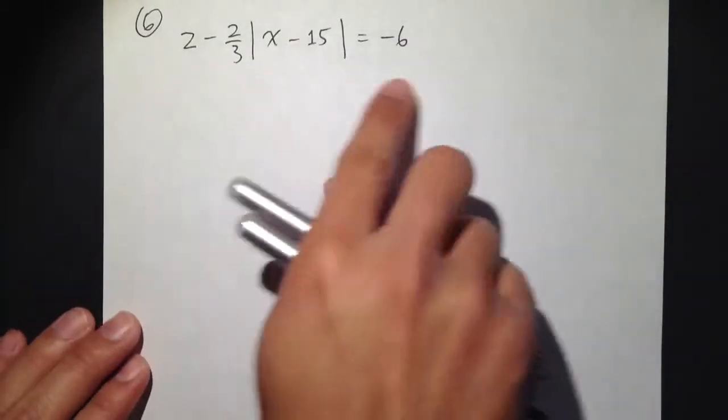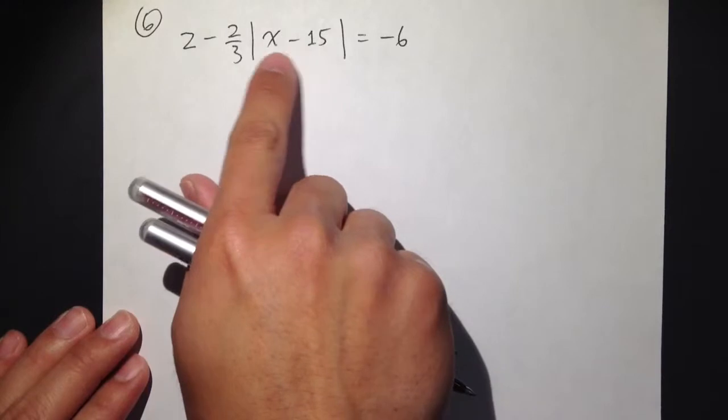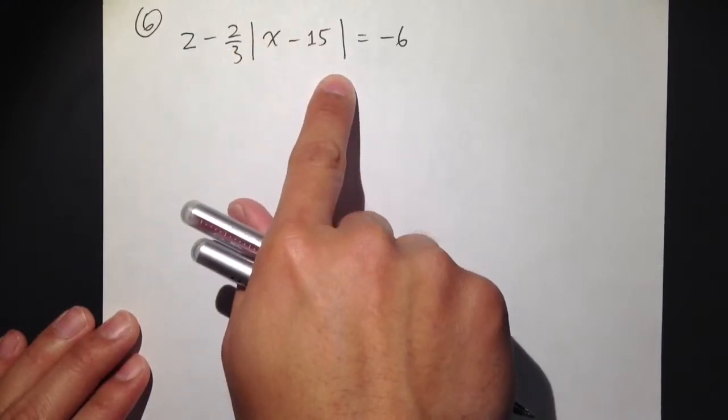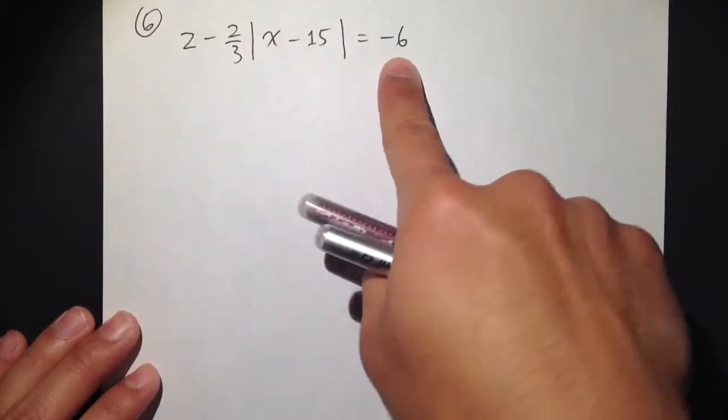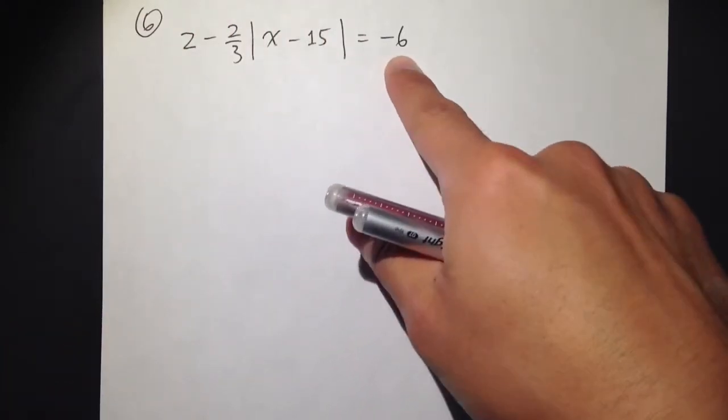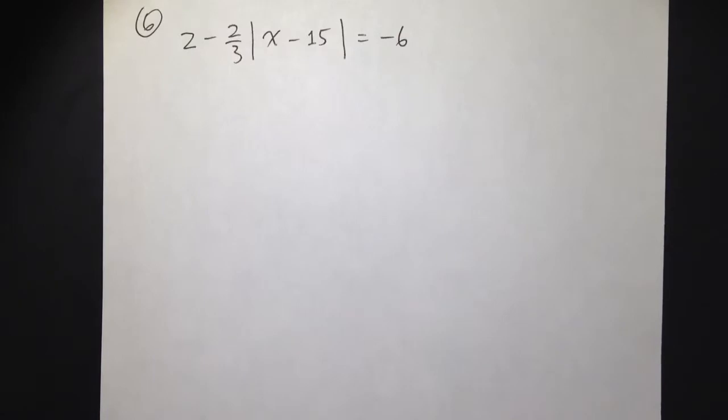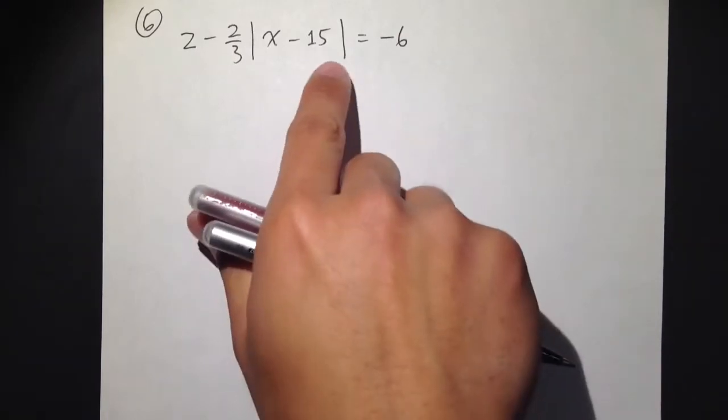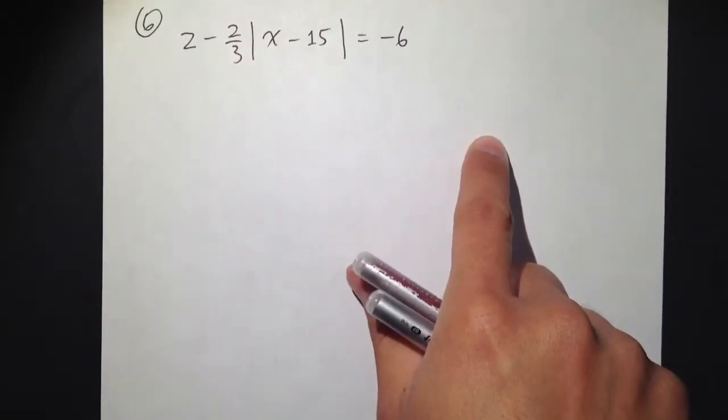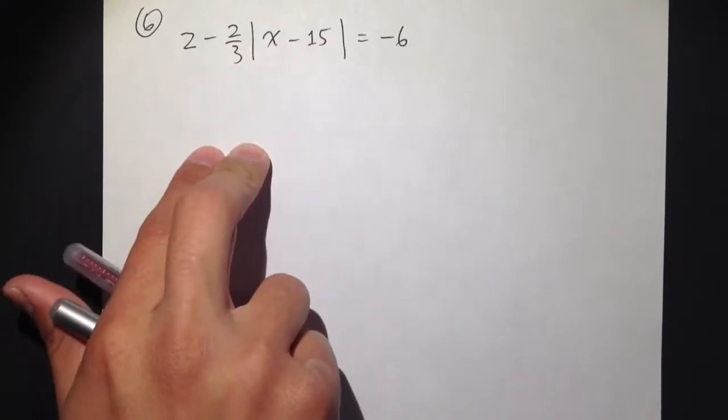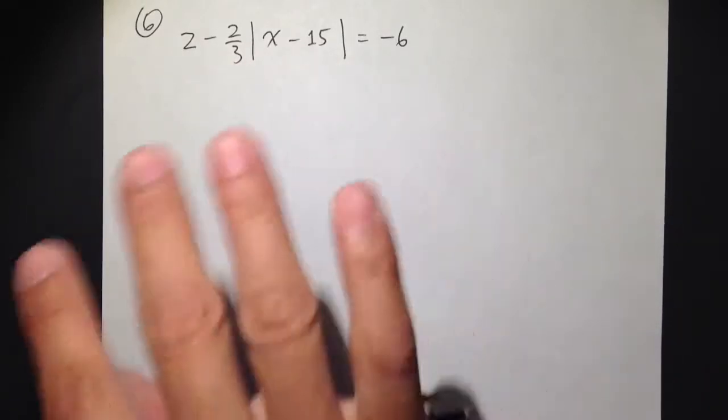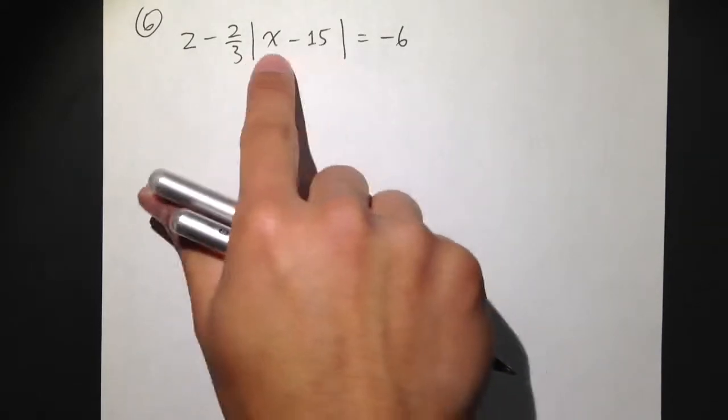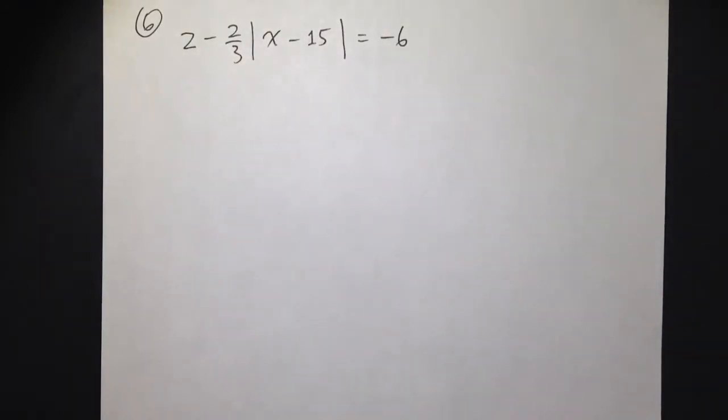Whenever we are solving absolute value equations, we have to first isolate the absolute value. We cannot just say, okay, we see this is equal to a negative number and say this has no solution. Or I cannot say, let's just break it apart into two different equations to make this equal to positive 6, to make this equal to negative 6. We cannot do anything else unless we have the absolute value by itself.